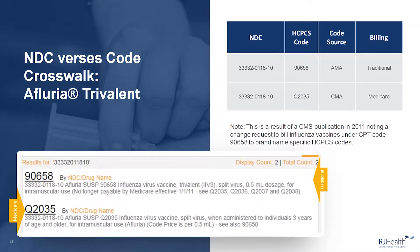Alright Chris, we've seen how the makeup, form, and dose of a vaccine can determine the correct NDC to HCPCS code or CPT code crosswalk. What else can factor into the correct code selection?